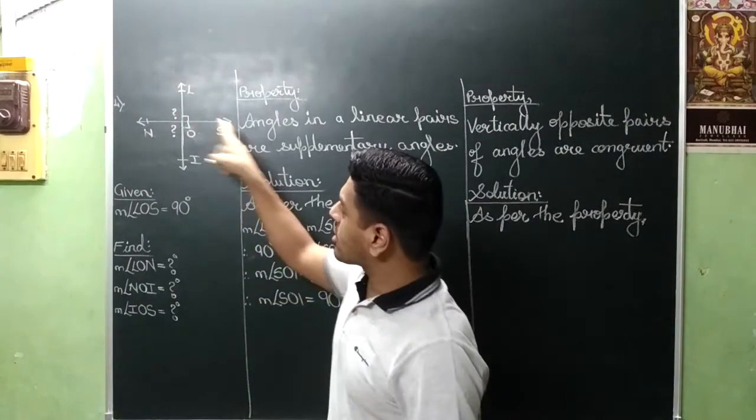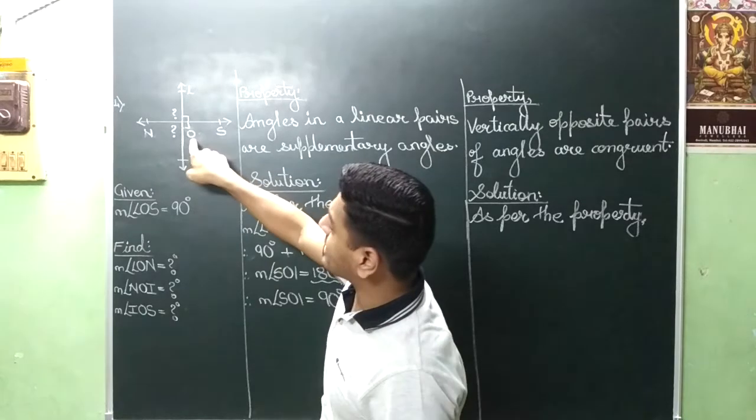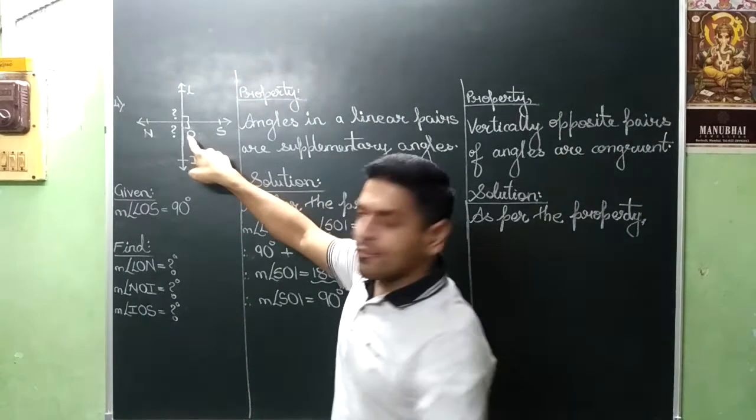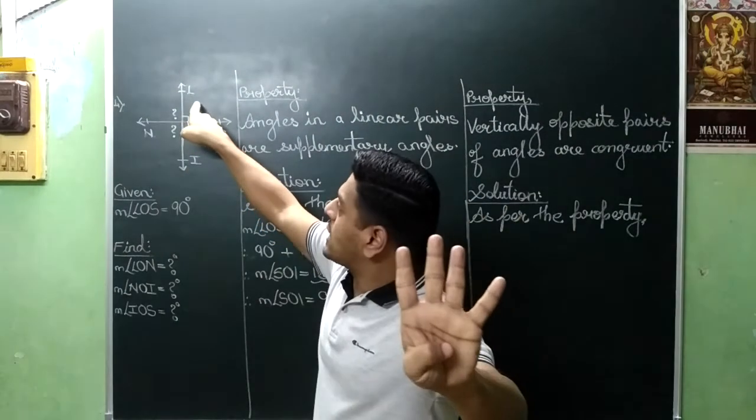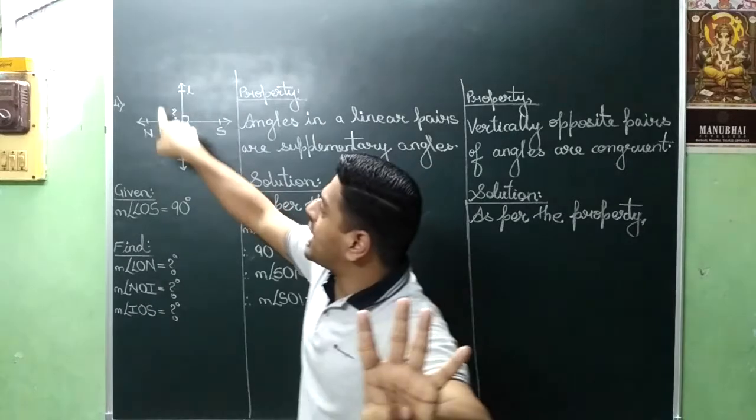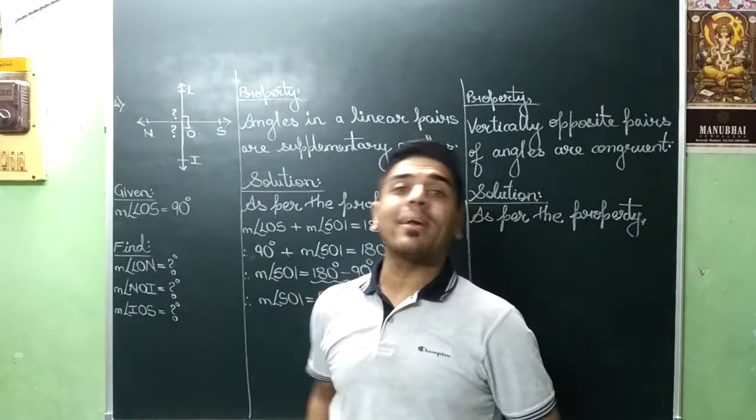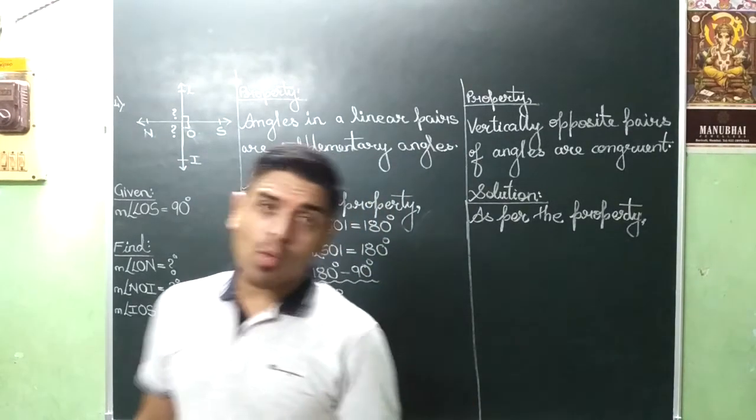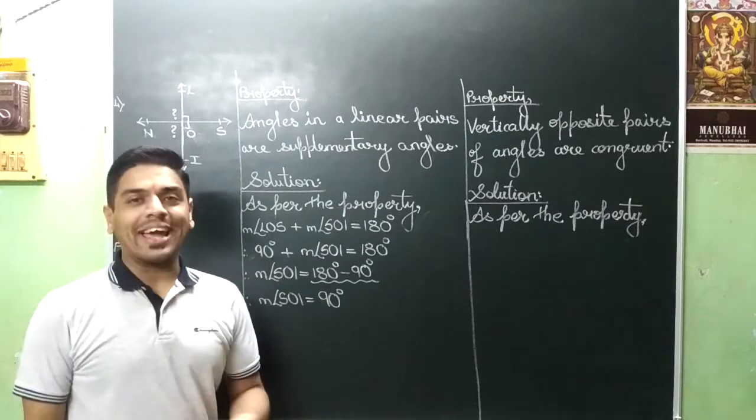So same. Two lines are getting intercepted at point O. So we get four different angles. One, two, three, four. So aisa figure ban jaata hai aapka vertically opposite pairs of angles.